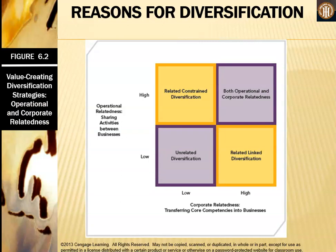Going back to look at value-creating diversification strategies in more detail: we have operational relatedness and corporate relatedness on a spectrum. Operational relatedness is about sharing activities between businesses, while corporate relatedness is about transferring core competencies to businesses. On the high end of the spectrum, firms share activities or transfer core competencies. It is on this scale that you determine whether a company is using a related constrained diversification, whether it is unrelated, or whether it is related linked.